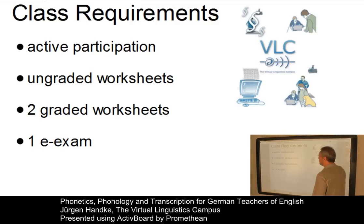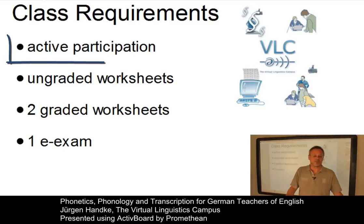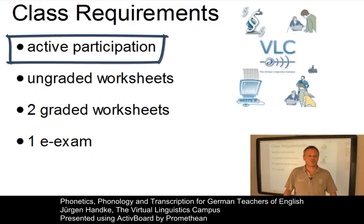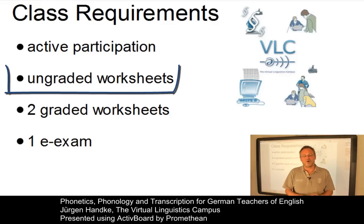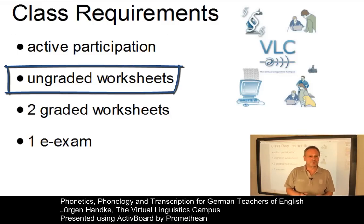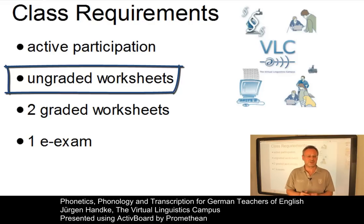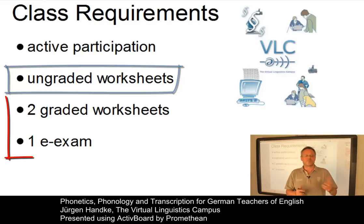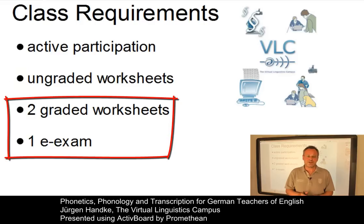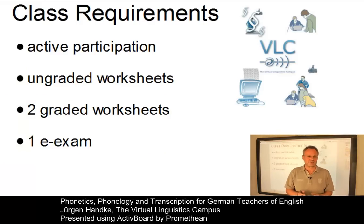Finally, what do you have to do in order to get the class credits? First of all, you have to actively participate — that is really a prerequisite. We also offer you the chance to do a large number of ungraded worksheets. These make sure that you have understood the content of each unit prior to each in-class meeting. And on the basis of two graded worksheets and one e-exam, you will eventually be awarded the class mark.